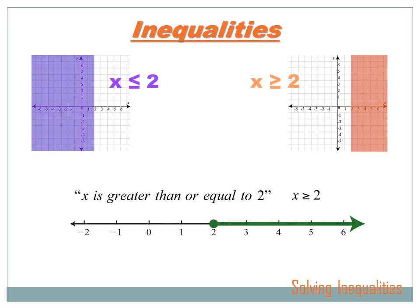We can put inequalities on a number line, or we can graph them. Let's look at the number line first. I've got an expression: x is greater than or equal to 2, and here's a number line. That green dot is 2, and what this green line is saying is that everything to the right of 2 is larger than 2 — 3 is larger than 2, 4 is larger than 2, and so forth. It's telling us that x falls somewhere on that green line.